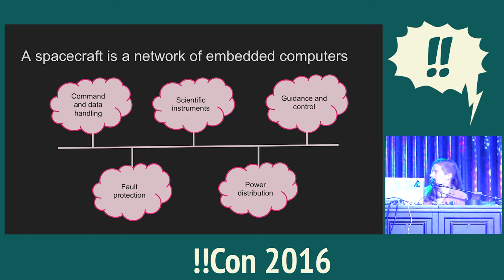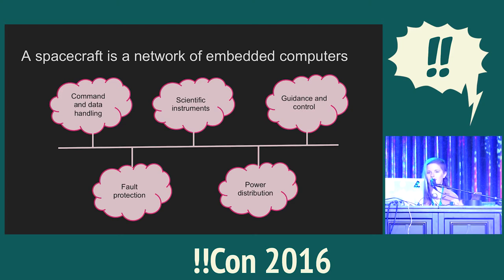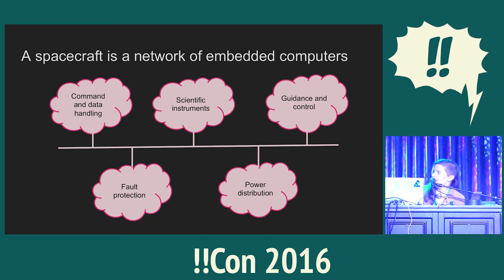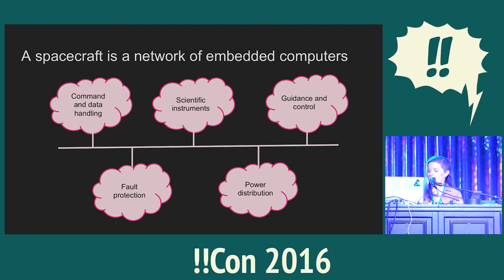The clouds in this diagram represent functions that a spacecraft does, and you might group them among different computers on the spacecraft. You might have one computer doing command and data handling, and you typically have many computers running the scientific instruments. That code is typically developed entirely independently from the rest of the spacecraft, or you might have a couple of these functions being performed by one computer. There are definitely multiple computers on any moderately sophisticated spacecraft.